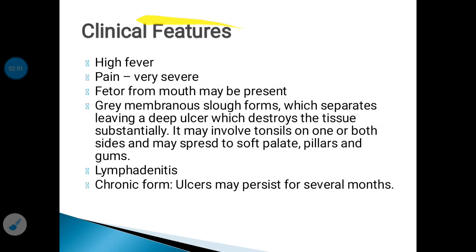Once the infection takes place, it produces clinical features like high fever, which is the first symptom to appear. There is severe pain in the throat and foetor from the mouth — a bad smell coming from the mouth. The main feature is that a grey membranous slough forms, which separates leaving a deep ulcer that destroys the tissue substantially. It involves the tonsils on one or both sides and may spread to the soft palate, pillars, and gums. The cervical lymph nodes will show lymphadenitis, which may present in chronic form.